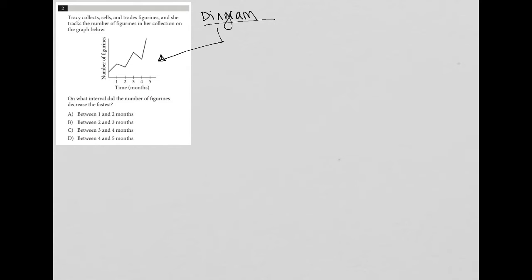So the best way to do that is to look at the x-axis. We have time that's measured in months—month one, two, three, four, and five. And then on our y-axis, we have number of figurines. So this is figurines over five months time.